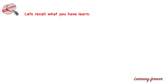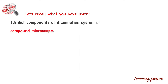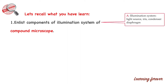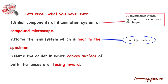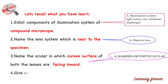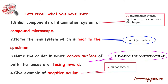Let's recall what we have learned. Question 1: Enlist components of the illumination system. Answer: The illumination system consists of a light source, iris, condenser, and diaphragm. Question 2: Name the lens system near to the specimen. Answer: It is called the objective lens. Question 3: Name the ocular in which the convex surface of both lenses faces inward. Answer: It is Ramsden or positive ocular. Question 4: Give an example of a negative ocular. Answer: Huygenian ocular — it is negative because the focus is inside the eyepiece, whereas in a positive ocular the focus is outside.